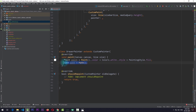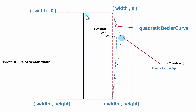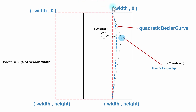To understand the path we're creating, here's a simple demonstration. This black box is the screen and the dashed box is the drawer. We need to create a path with four points: minus-width comma zero, width comma zero, width comma height, and minus-width comma height. Width here equals 65% of the screen. So the path starts from minus-width comma zero, creates a line to width comma zero, then to width comma height, then to minus-width comma height, and then we close the path.